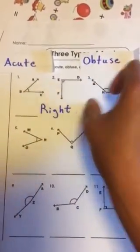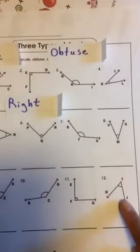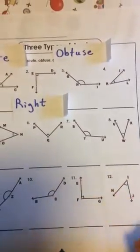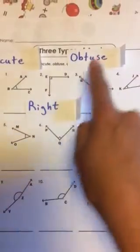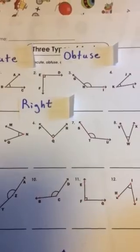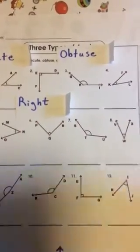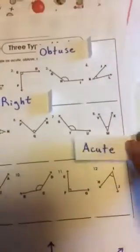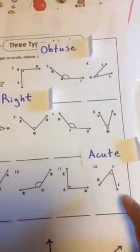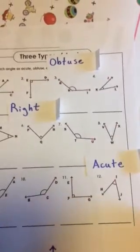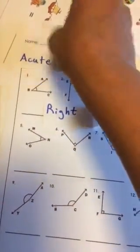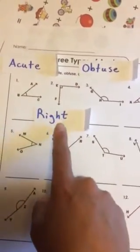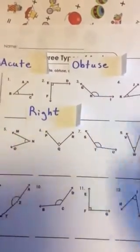You have one left — look at number twelve. Is it acute, right, or obtuse? That's right, guys — it is acute, because it is smaller than the right angle. Good job, guys. You're doing great. A cute little angle, right angle, and obtuse — good job! We'll see you next time.